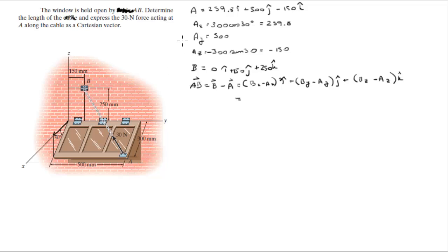When you plug the numbers in for each of the vectors, you're going to get that this vector is equal to negative 259.8 I minus 350 J plus 400 K.